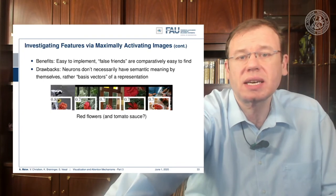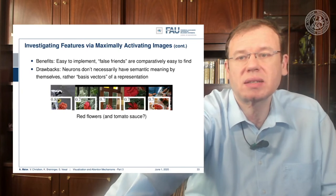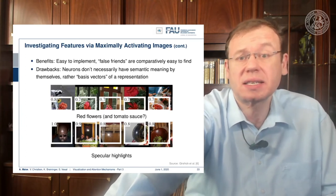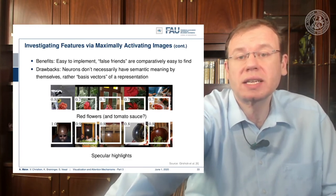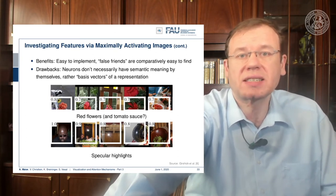Here we have another example. You could ask whether this is a red-flowers-and-tomato-sauce detector or a detector for specular highlights. At least you can figure out which neuron is related to what kind of input, so you get some feeling for what's happening in the network and which things cluster together.